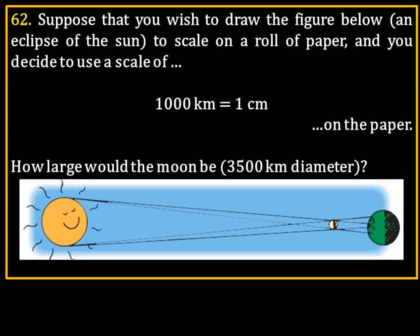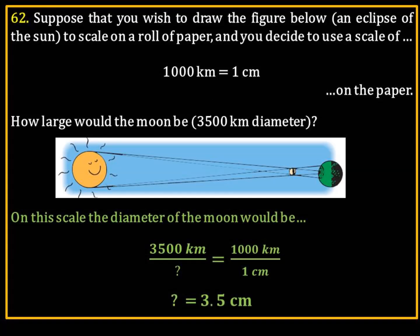Now, the proportional relationships that we'll set up for the first one is the same we're going to set up for all of them, and that's going to be 3,500 kilometers over question mark equals 1,000 kilometers over one centimeter. So, you cross-multiply: 1 times 3,500 divided by 1,000, and the answer is going to be 3.5 centimeters. Fair enough. Very straightforward.